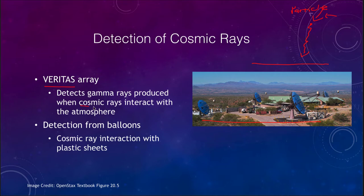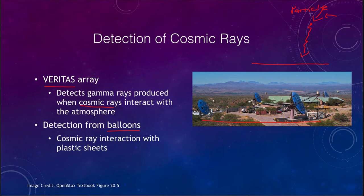We can also use balloons — put balloons up in the atmosphere and use sheets of plastic that will then interact with the cosmic rays, detect them, and catch them. We use those again to work backwards to try to learn more about what these cosmic rays are. But again, they're very difficult to study because they don't travel in straight lines, so we don't know exactly where they're coming from, making it much more difficult than studying ordinary types of electromagnetic radiation.